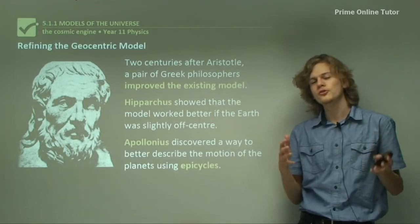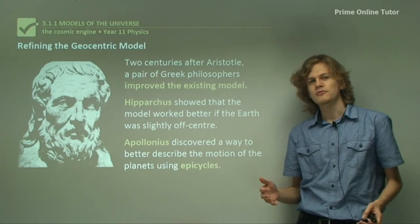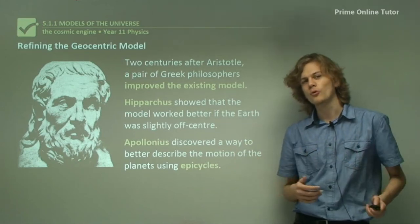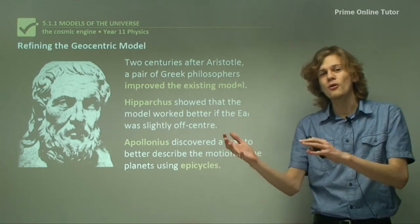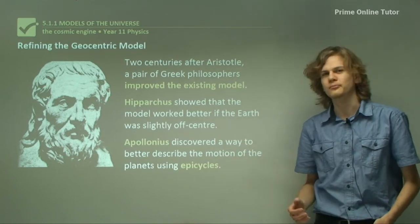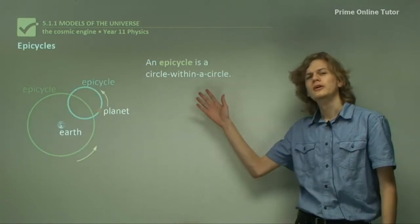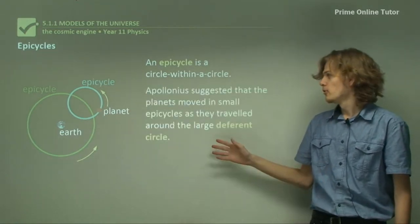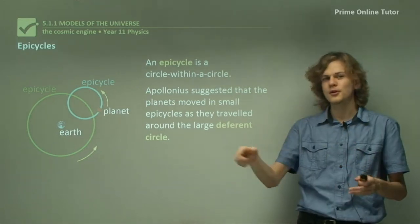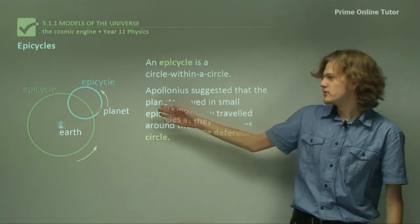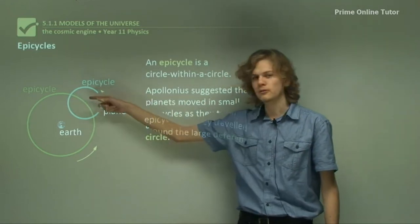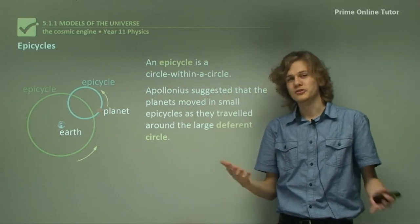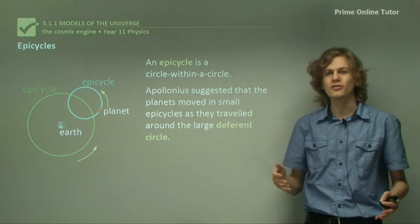Apollonius discovered a way to better describe the motion of the planets using epicycles. He noticed that the paths that the planets were following were not completely circular, but they seemed to vary back and forth sometimes. In real life, of course, this is because of the Earth's movement around the Sun. But back then, they thought the Earth was stationary. An epicycle is something like a circle within a circle. Apollonius suggested that the planets moved in small epicycles as they went around the bigger circle, the deferent circle. In real life, we know this doesn't happen. The apparent motion of the epicycles is simply because the Earth is moving around the Sun.